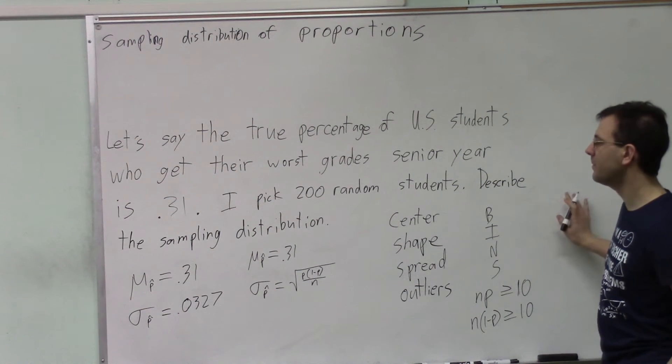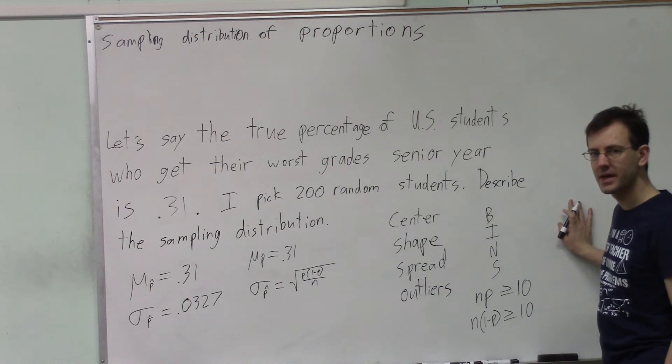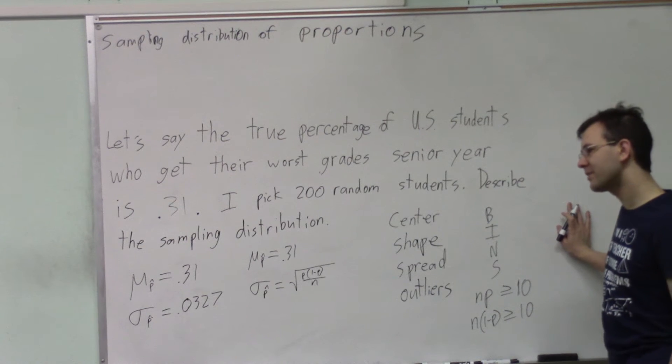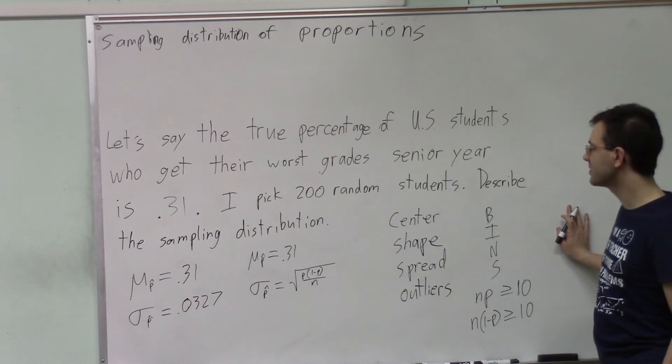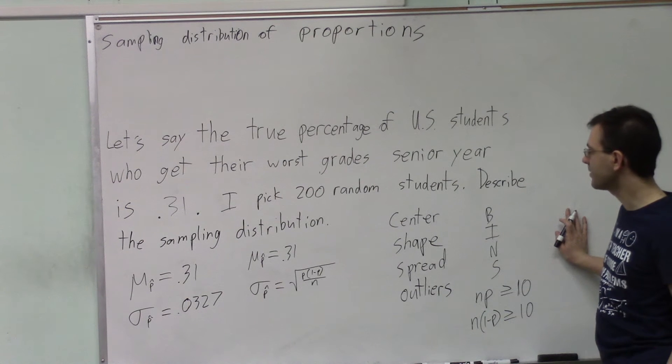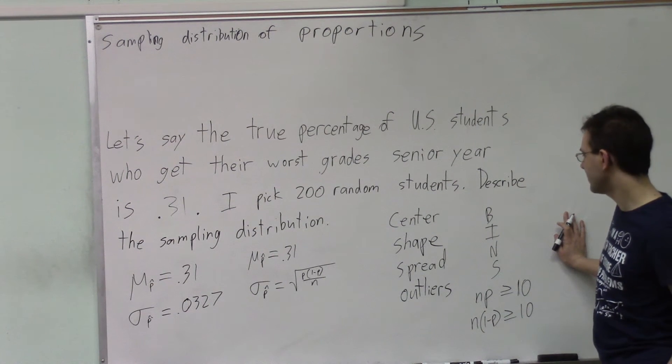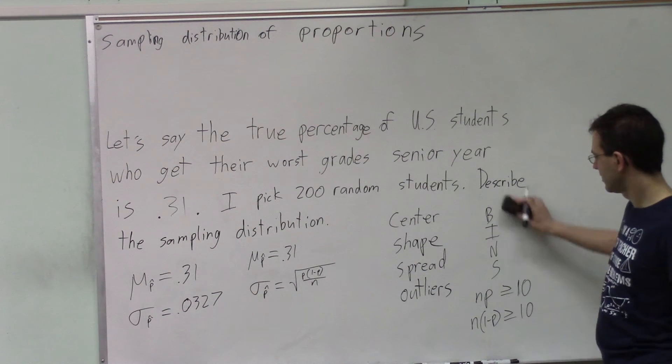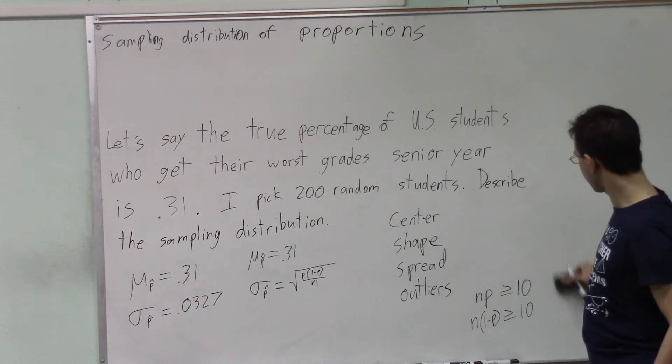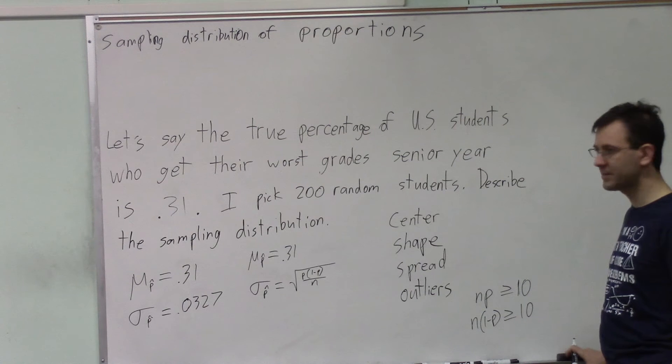And well, are these people independent? Might we not run out of high schoolers who have their worst grades senior year? Well, if we pick 200 random students, do we start running out of students? Well, that depends how many students are there.